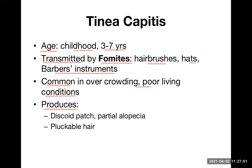Tinea capitis produces a discolored patchy area or partial alopecia on the scalp. Because of this patch, there will be loss of hair in that area, appearing as patchy hair loss — not diffuse loss everywhere. There may be multiple areas where hair loss is found. If hair loss has not occurred yet, that hair can be easily plucked, sometimes even without pain. Normal hair causes considerable pain when removed, but diseased hair in tinea capitis can be plucked painlessly.